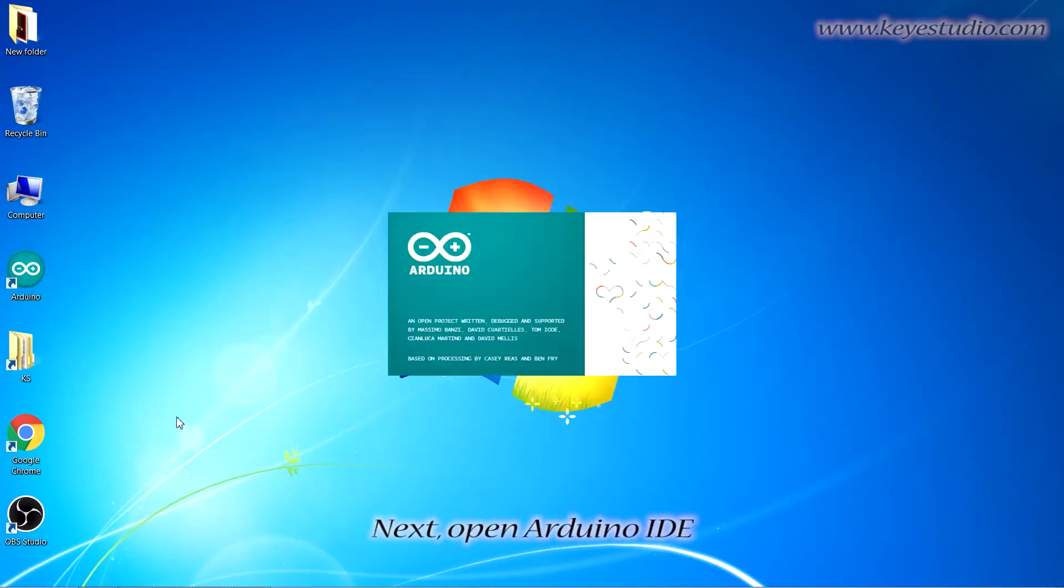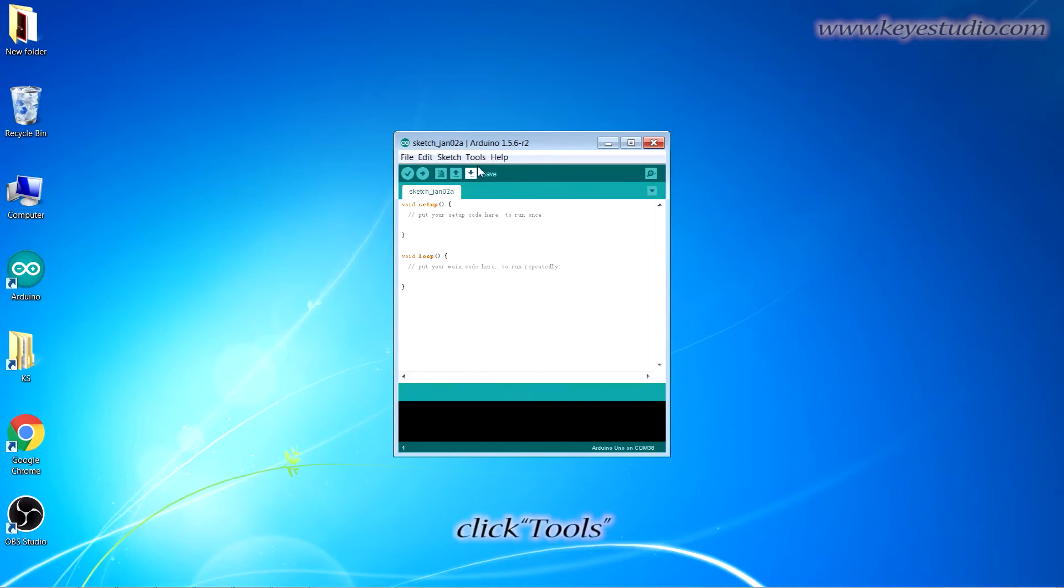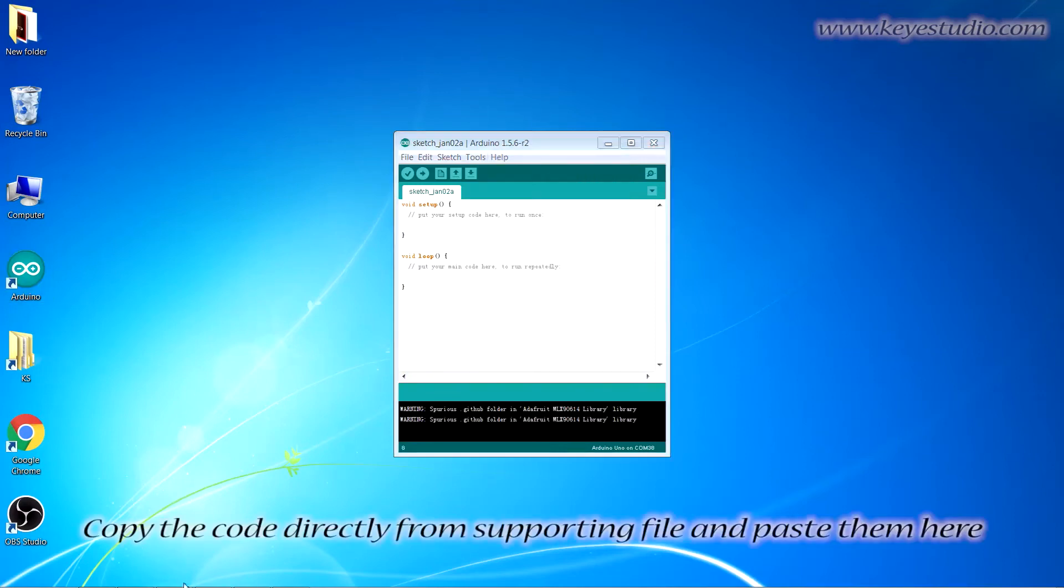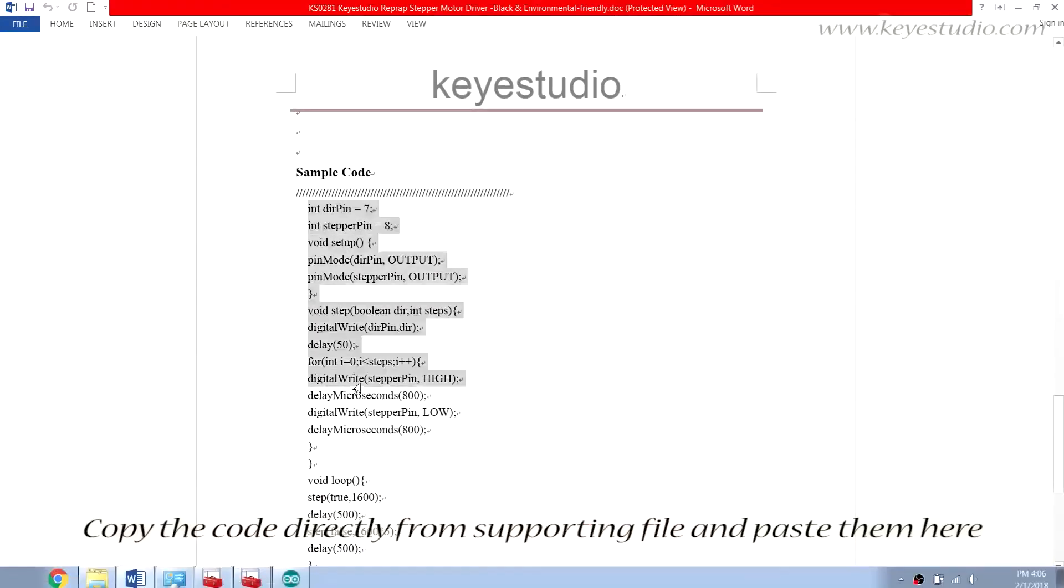Next, open Arduino IDE. Under Tools, for Board, select Arduino UNO. For Port, select COM38. Copy the code directly from the supporting file and paste it here.